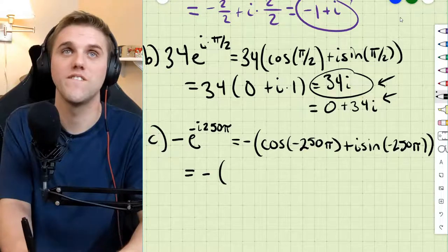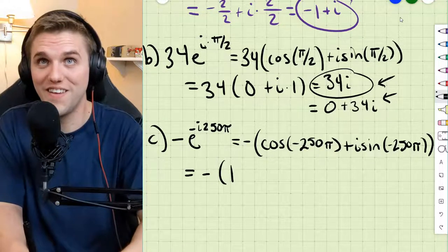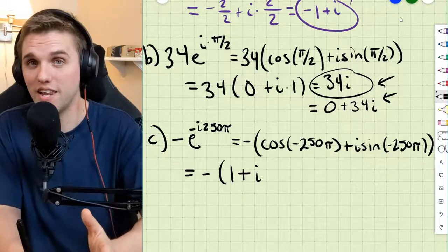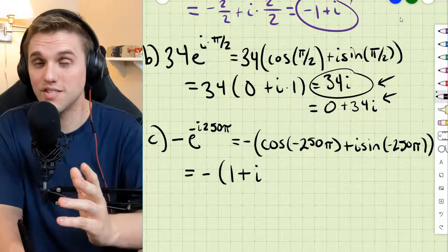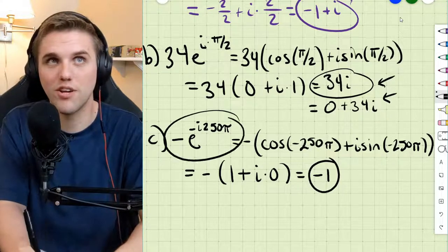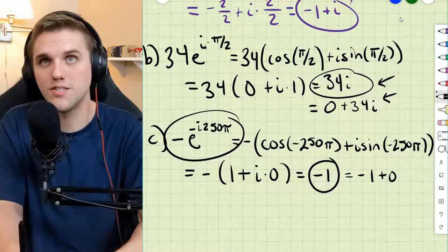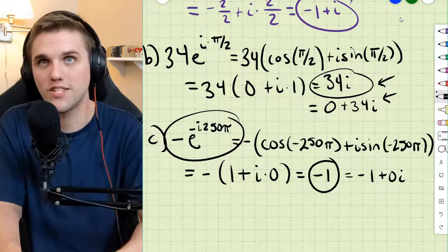This is negative cosine of negative 250π is 1 plus i times sine of negative 250π is 0. And so this is just negative 1. And so this number you're looking at right here is negative 1 plus 0i. That's the rectangular form.